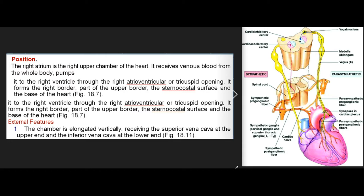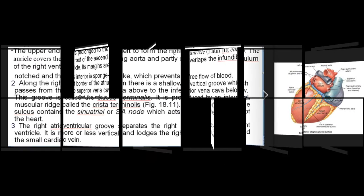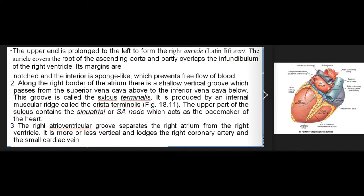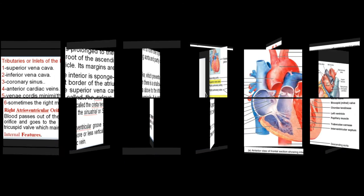External features of the right atrium: The chamber is elongated vertically, receiving the superior vena cava at the upper end and the inferior vena cava at the lower end. The upper end is prolonged to the left to form the right auricle, which covers the root of the ascending aorta and partly overlaps the infundibulum of the right ventricle; its margins are notched and the interior is sponge-like. Along the right border there is a shallow vertical groove — the sulcus terminalis — running from the superior to the inferior vena cava. This is produced by an internal muscular ridge, the crista terminalis. The upper part of the sulcus contains the sinoatrial (SA) node, the pacemaker of the heart. The right atrioventricular groove separates the right atrium from the right ventricle and lodges the right coronary artery and the small cardiac vein.